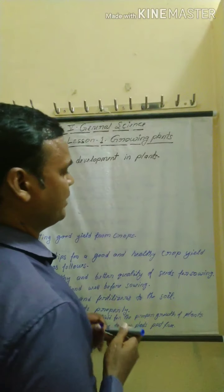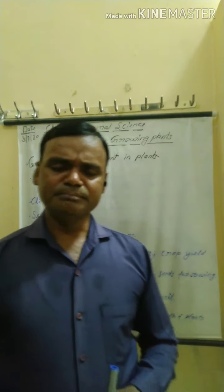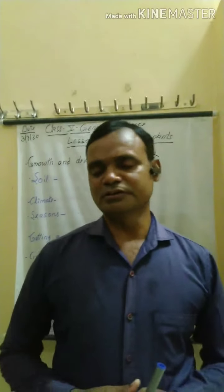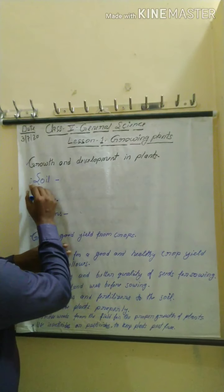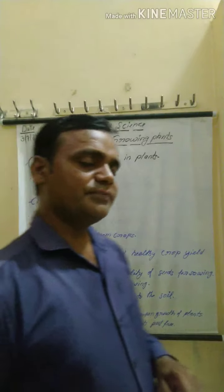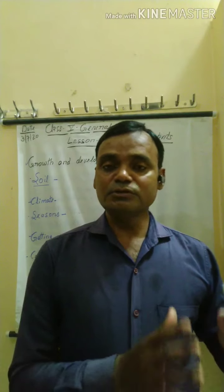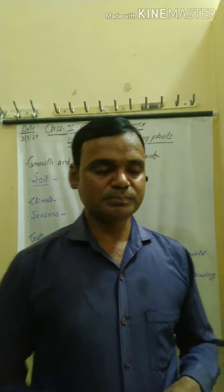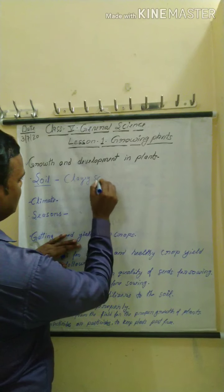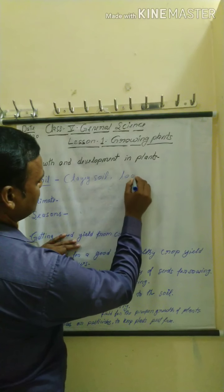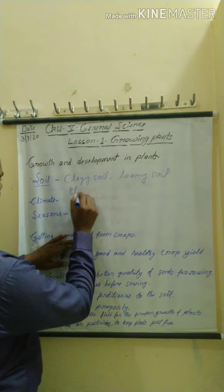Growth and development in plants — many factors are responsible for the growth of plants. Some factors are given here, let's see them one by one. First is soil. You know that different types of soil are found, and crops grow in particular soils. Types include clay soil, loamy soil, and black soil.